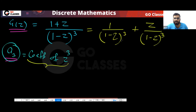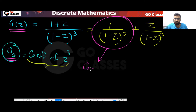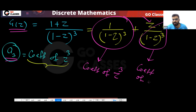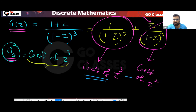Your generating function is a summation of two parts: 1/(1-z)³ plus z/(1-z)³. In the first part, find the coefficient of z³. In the second part, since there is already a z factor, find the coefficient of z². The answer will be the sum of these two.